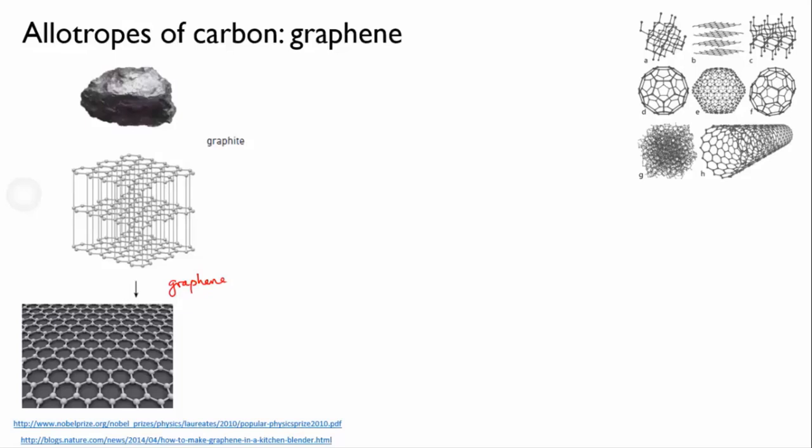So how do you separate a single molecular sheet from a lump of graphite? Andre Geim and Konstantin Novoselov at the University of Manchester managed to do this during a series of fun Friday experiments that they were running, using some highly advanced equipment: sticky tape.